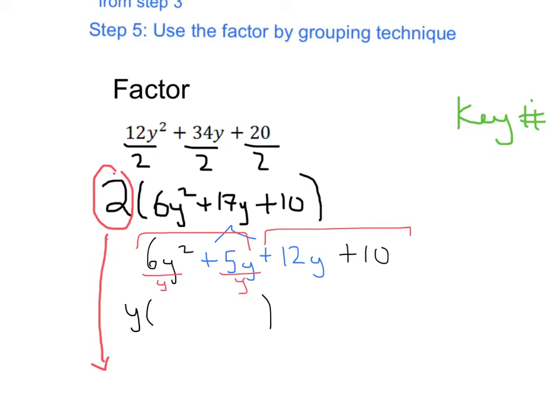Again, that's going to be like dividing each of these terms by y. In the first one, 6y² divided by y is just going to give us 6 and then y to the first power. Over here, 5y divided by y, those y's are going to cancel and we're just going to get a plus 5.